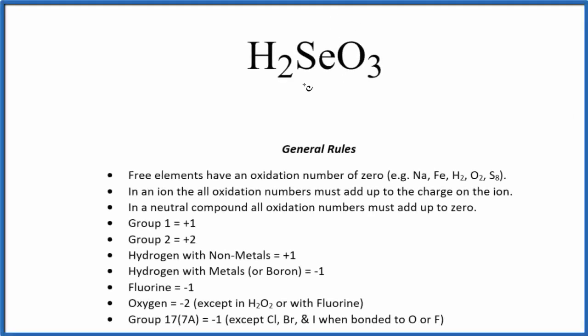Let's find the oxidation numbers for each element in H2SeO3. Since there's no negative or positive sign, we know this is a neutral compound. In a neutral compound, all the oxidation numbers for each element add up to zero.